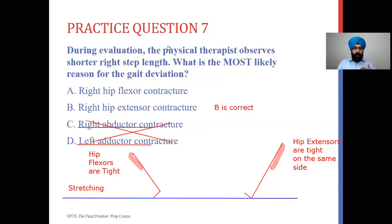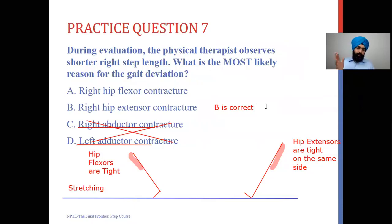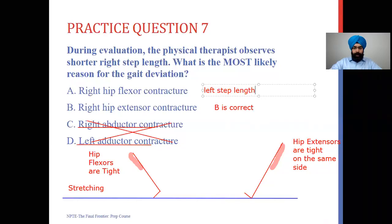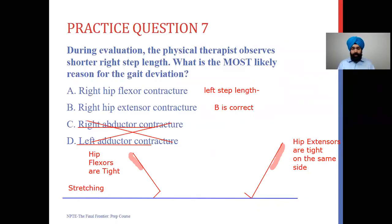A common question is: how do you rule out right hip flexor contracture? A right hip flexor contracture means the person cannot go into full extension on the right side, which means they won't have a good push-off. That affects the opposite side — it's going to reduce the left step length, not the right. So right hip flexor contracture would cause a shorter left step length, making option A incorrect. These two questions together — hip extension contracture and hip flexion contracture — should help you answer gait questions on the NPTE.